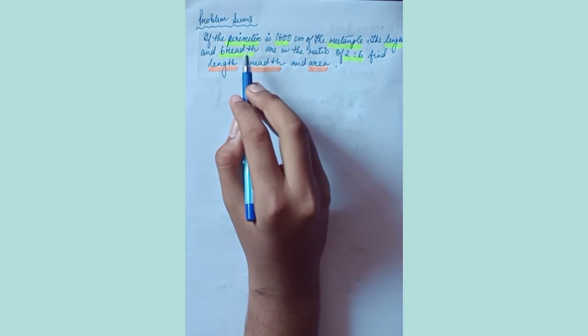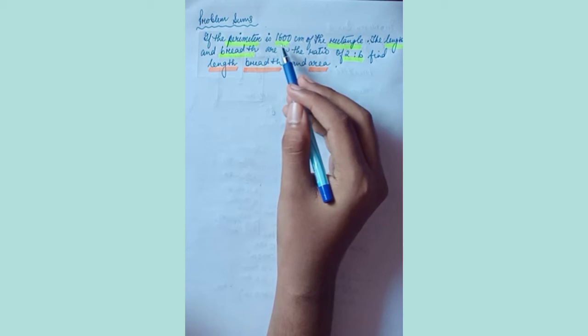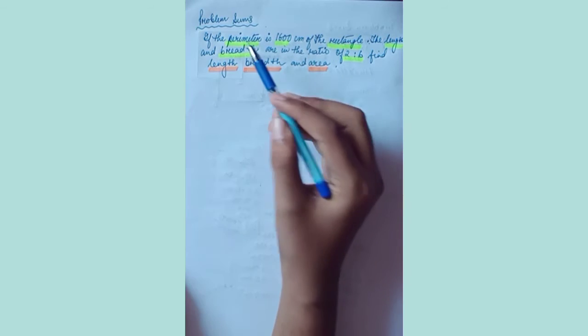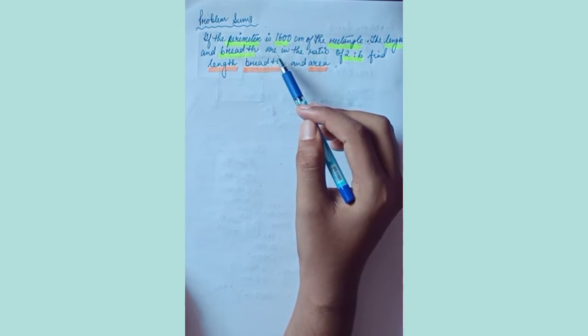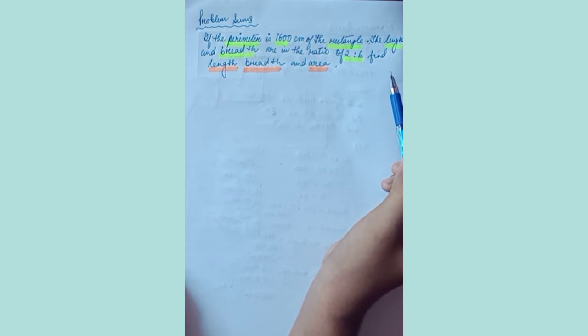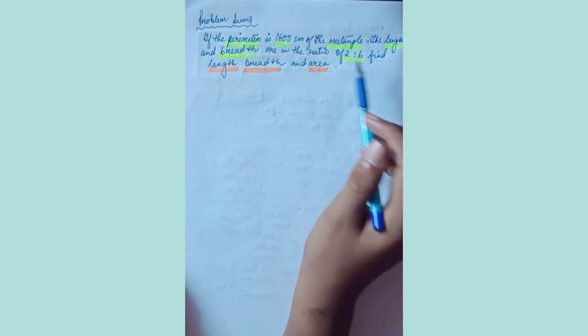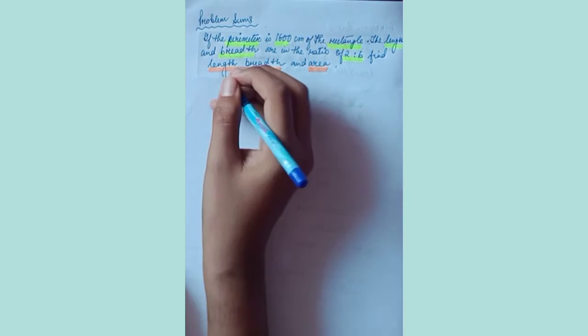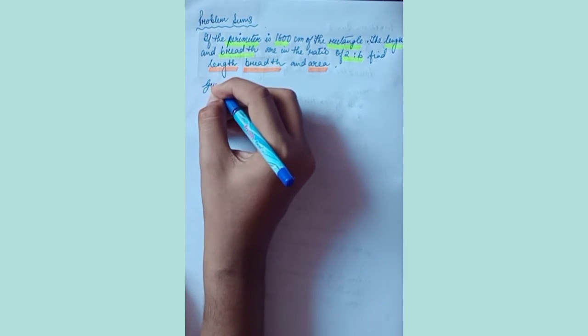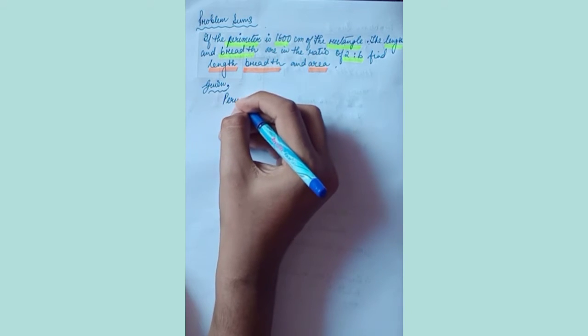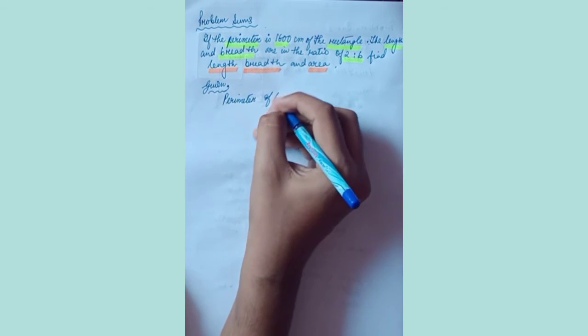So as you can see, I have underlined what is given: perimeter, how much? 1600 centimeters. Perimeter of what? Rectangle. Length and breadth are in the ratio of 2 is to 6. That is also given. What to find? Length, breadth, and area.